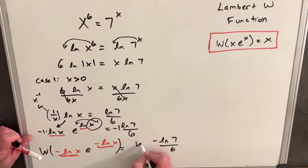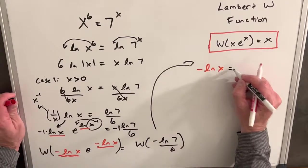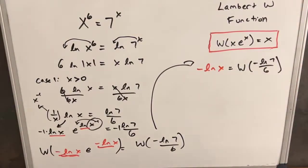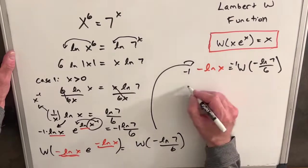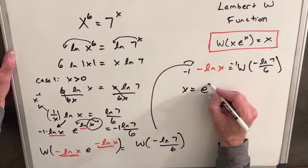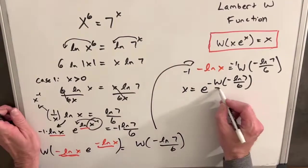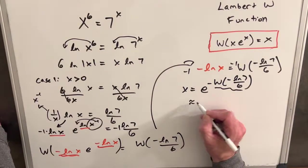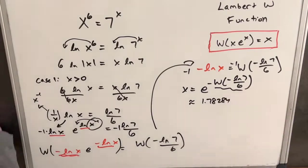We apply the Lambert W function to both sides. On the left side we pull out negative ln x, and on the right we have W(−ln 7 / 6). Solving for x, we multiply both sides by negative 1, then rewrite as x = e^{−W(−ln 7 / 6)}. This part is hard to compute by hand, but using Wolfram Alpha I calculated the solution to be approximately 1.78284.